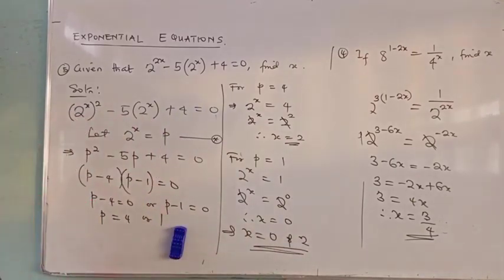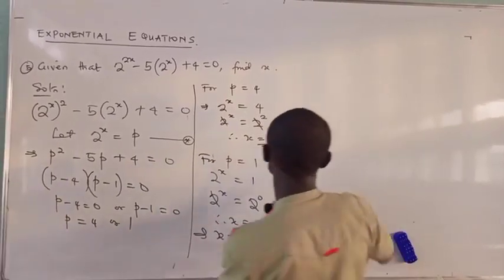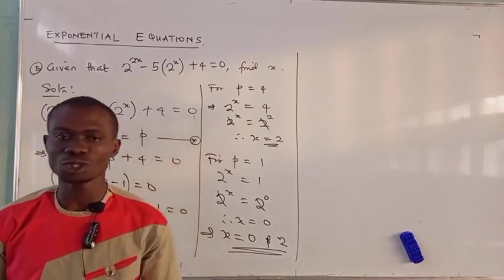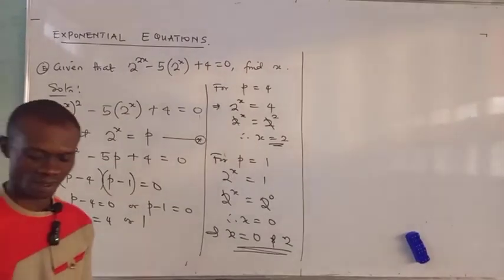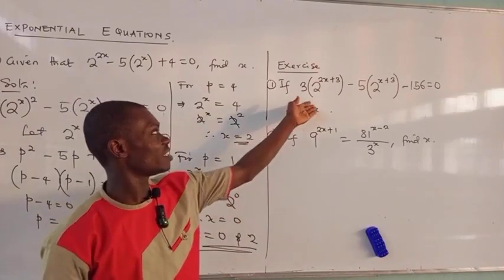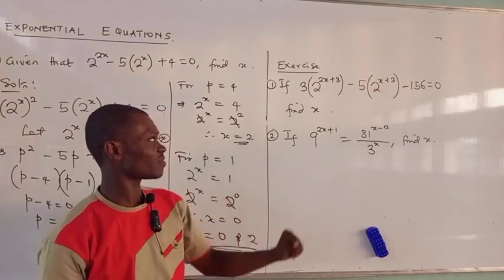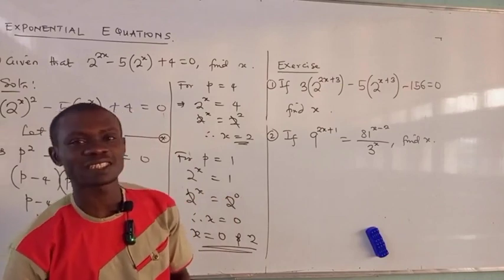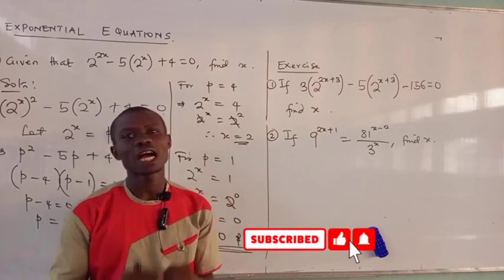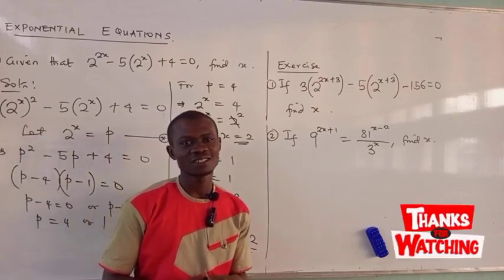That's where we'll end for this class. Before we go, I'll drop an exercise for you: if 3 times 2 raised to power (x+3) minus 5 times 2 raised to power x plus 3, minus 156 equals 0, find x. There's also a second problem — find x and comment your answers in the comment section below. Please subscribe to this YouTube channel, use the like button, and thank you for watching. See you in the next video.